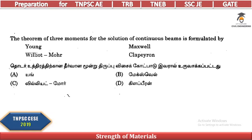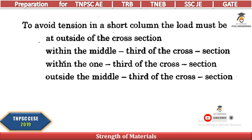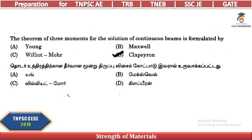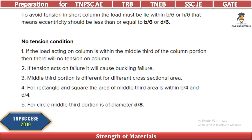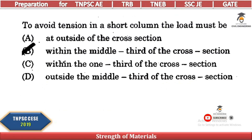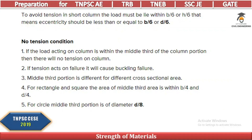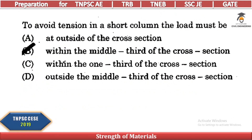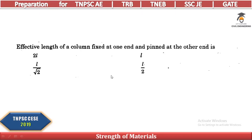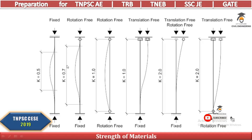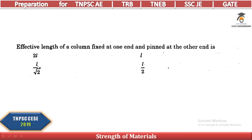The theorem of three moments for the solution of continuous beams is formulated by Clapeyron. To avoid tension in a short column, the load must act within the middle third of the cross-section — the kern — which is diameter/8 from the centroid. For a column fixed at one end and pinned at the other end, the effective length is L/√2, i.e., 0.7L.